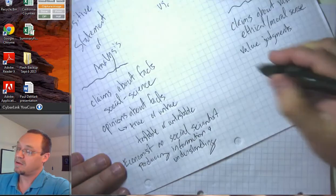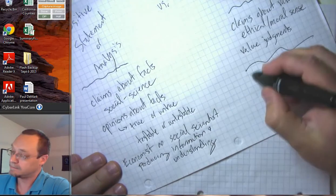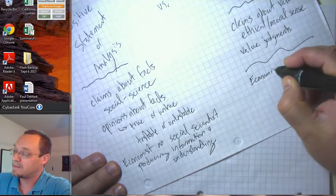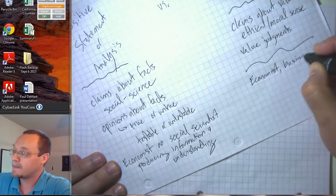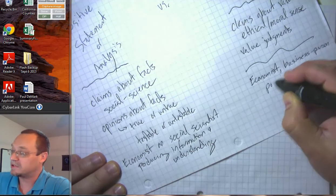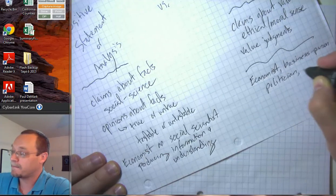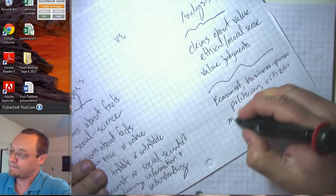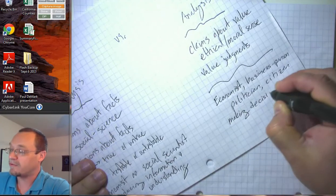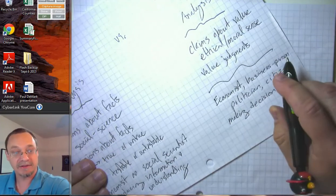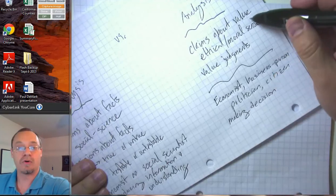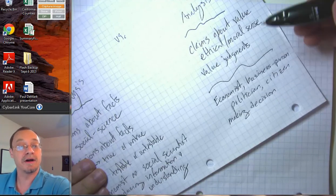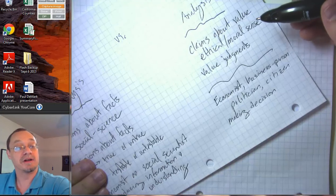On the other hand, when we're engaged in action, an economist or business person or politician or voter, when we actually come to make a decision, we can't rely on facts alone. We have to have some facts, but we also have to have some moral and ethical values that we're bringing in to evaluate the facts and consequences of actions and then weigh those consequences against each other.